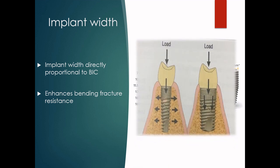Studies show that implants wider than 5 mm do not transfer adequate forces to supporting bone, leading to disuse bone loss, which is called the stress shielding effect — already discussed in our implant protective occlusion part 2.